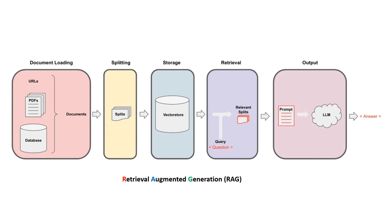Then you can use that information as context for your language model to get specific or customized responses based on your input query. This framework is called Retrieval Augmented Generation, or RAG. Using this RAG framework, you can use your external source of data as context information for your large language model.